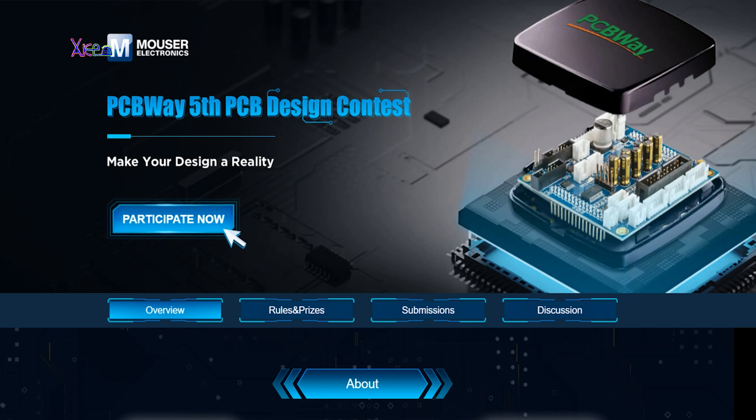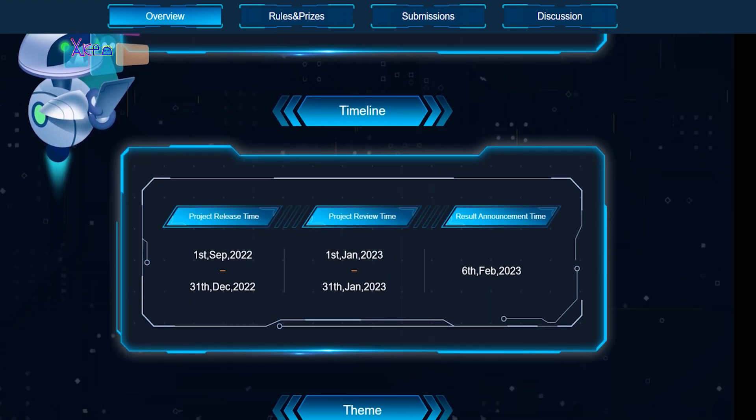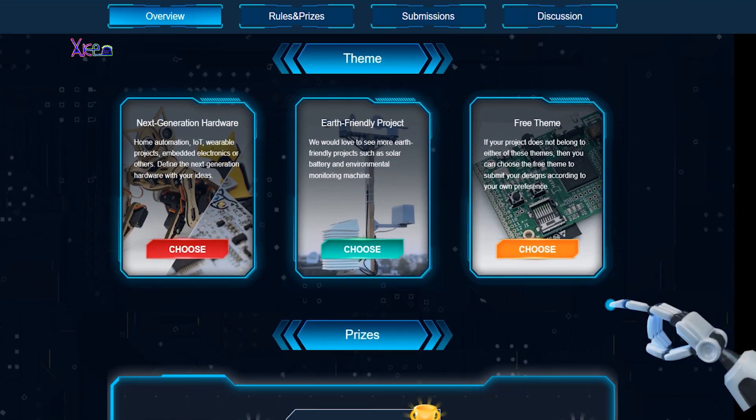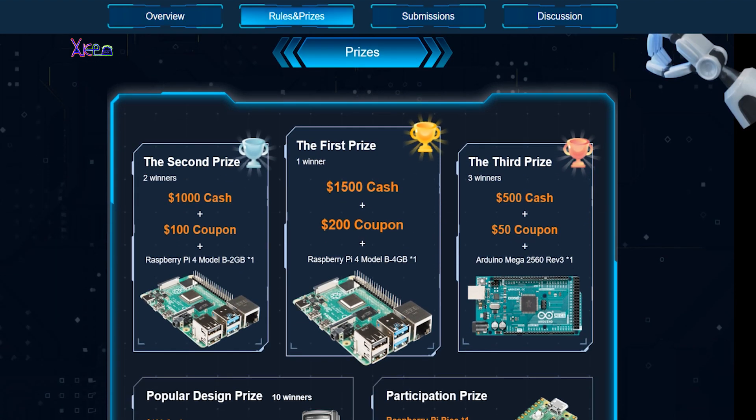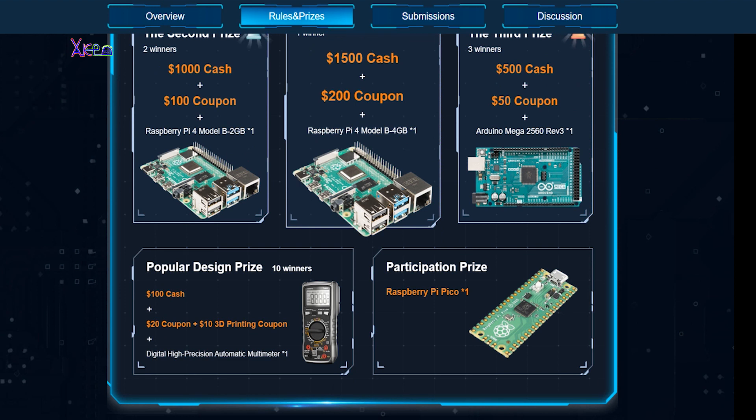Not to forget that right now is active the fifth PCB design contest by PCBWay and will last until end of this year. The theme project is next generation hardware, earth friendly project, or free theme. You can win one of prizes like real cash, Raspberry Pi boards, or multimeter. For more info check the links below.